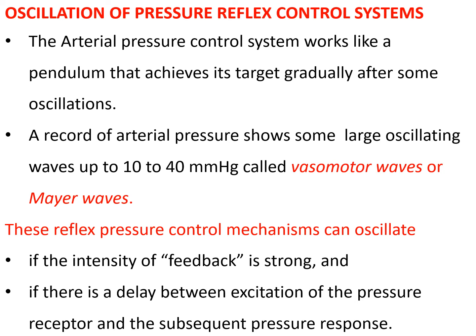We are now going to talk about the oscillations of the pressure reflex control systems. These oscillations can be seen during respiration — blood pressure increases or decreases a little during one respiratory cycle. During inspiration the blood pressure is a little less, and during expiration the blood pressure is relatively higher, because of variations in venous return to the left heart.